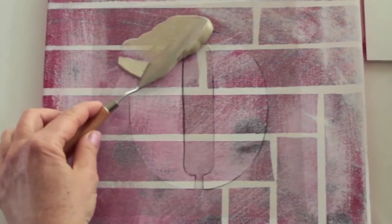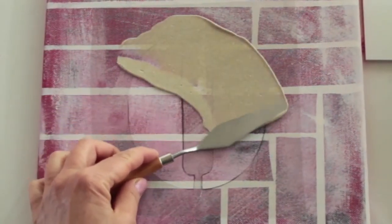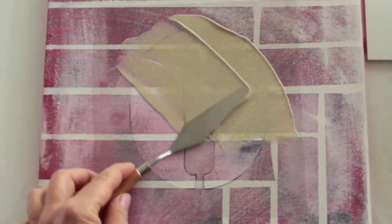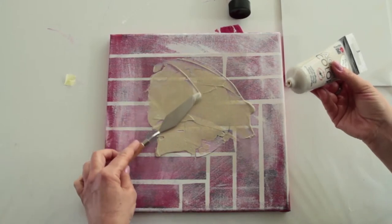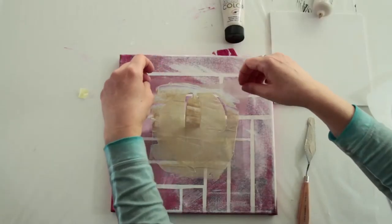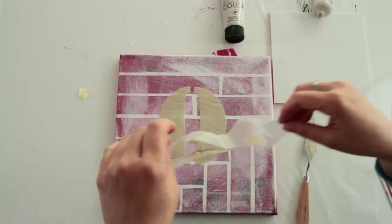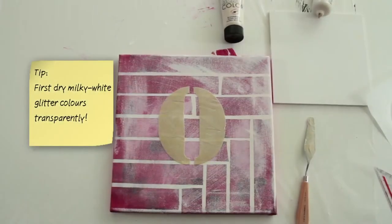For a golden glitter effect, smooth acrylic color paint glitter gold generously over the stencil design with a paint brush or paint knife. Carefully remove the stencil while the paint is still wet. The thicker the coat, the greater the glitter effect.